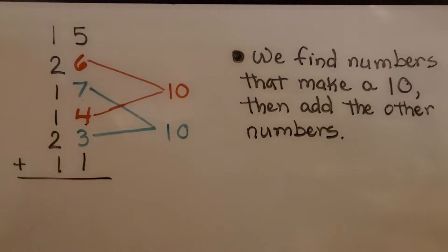In this equation, we have 15 plus 26 plus 17 plus 14 plus 23 plus 11. We look at the ones column and we find the digits that will equal 10. We have a 6 and a 4, that makes 10. We have a 7 and a 3, that makes 10.